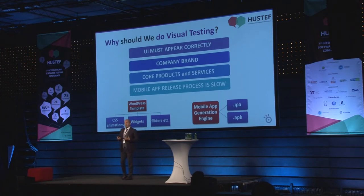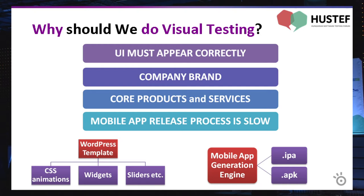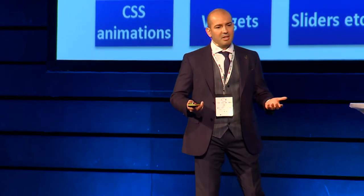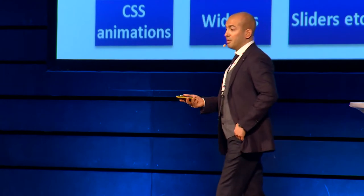Why should we do visual testing? First of all, the UI must appear correctly to the end user because users interact with our system via its UI. If there is a problem on the UI, they cannot interact with the system properly. So all kinds of animations and transitions should work flawlessly, and web element locations, sizes, and colors should appear as expected. Visual defects are easily recognized by users. If there is a problem on the UI, some users may take a screenshot and put it on social media and have fun with that problem — it's a nightmare for a test team. It also hurts the brand very negatively.